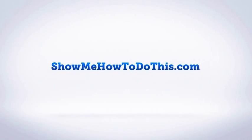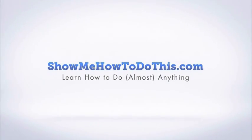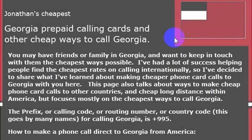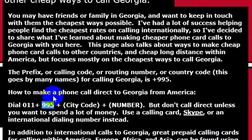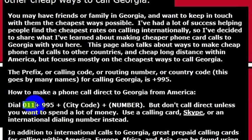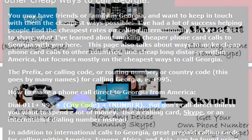Let's say you wanted to call Georgia — not Georgia the state in the United States, but Georgia the country, the one near Russia. If you wanted to call Georgia, you would need to know the international country code. For Georgia, the country code is 995. So if you were going to pick up the phone and call directly from a landline enabled for international calls, you would dial 011, then 995, then the number you were calling.